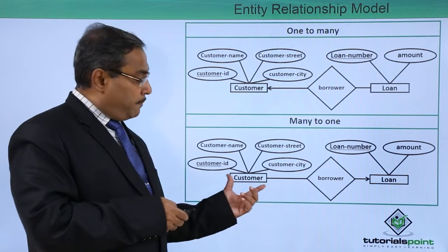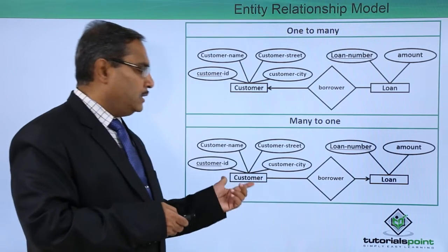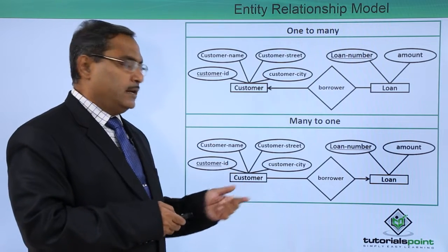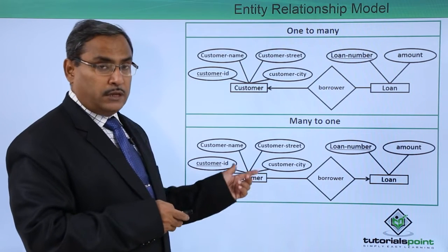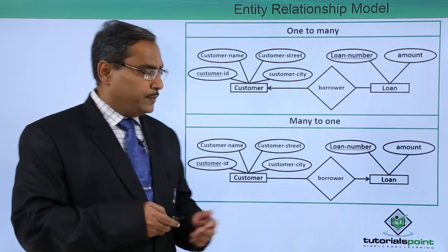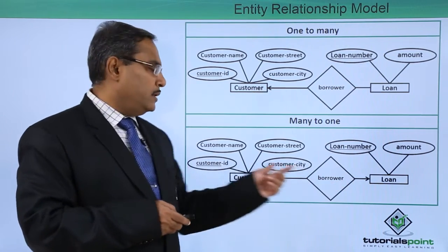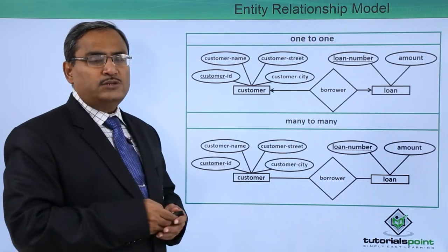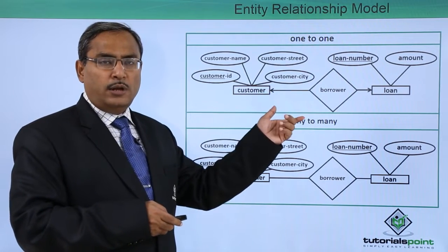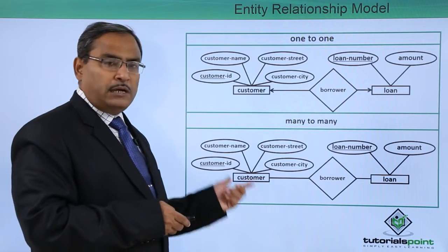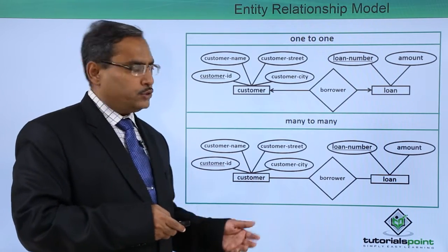Consider multiple customers against one loan: against one customer there will be one loan, but against one loan there will be multiple customers. This represents a joint loan or group loan issued by the bank, but a customer having one loan cannot have another parallel loan. For one to one, both sides have arrows — one customer can have a single loan at a time. Many to many means multiple customers and multiple loans, meaning the bank issues both parallel personal loans and group loans at the same time.